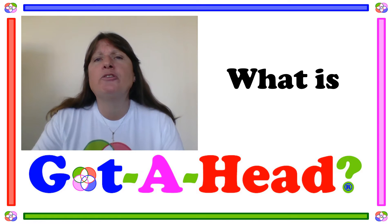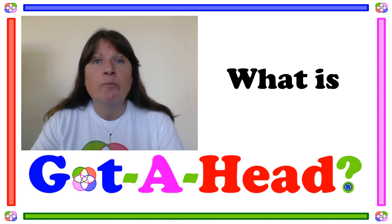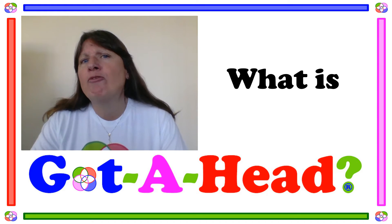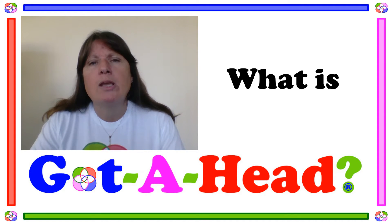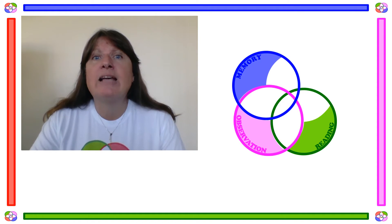And we do that using four distinct domains. We've got an acronym for them, and for the Terry Pratchett fans amongst you, it might raise a little smile because we call it MORT. Those domains are memory, observation, reading effectively, and thinking.